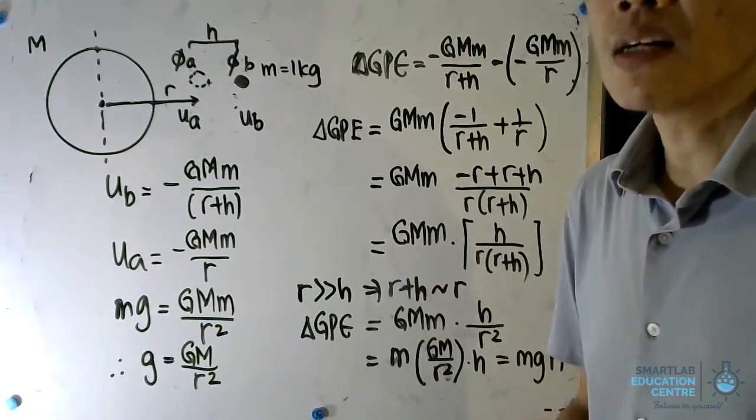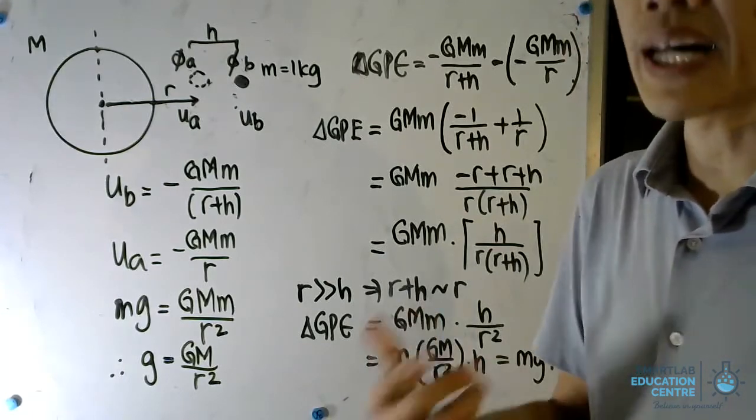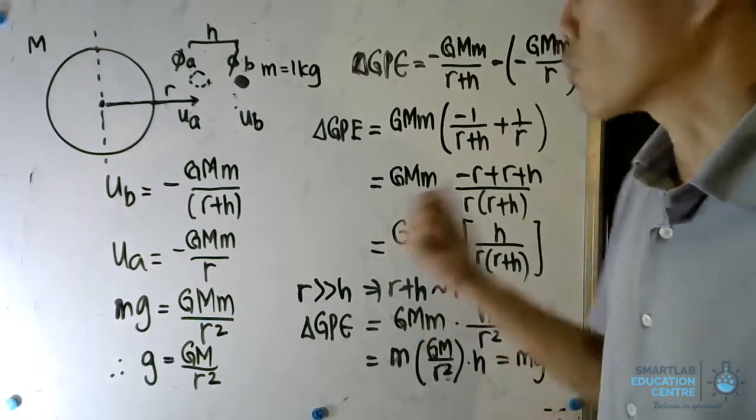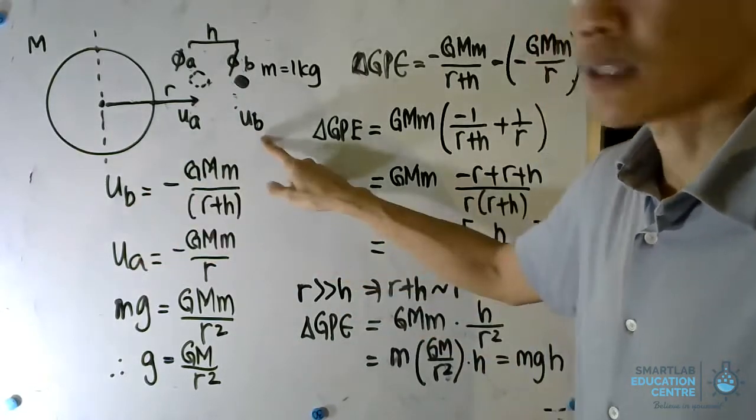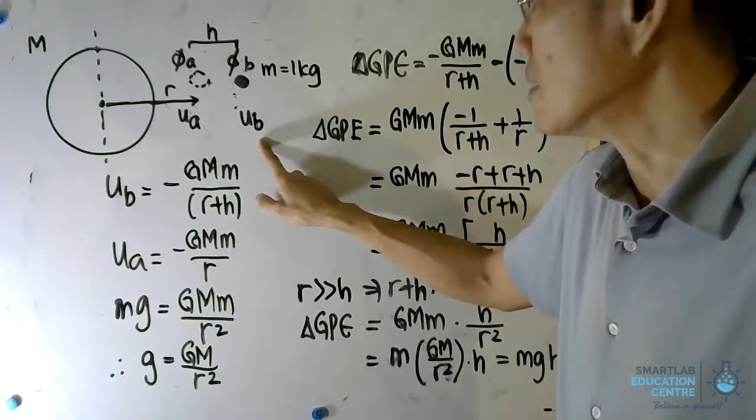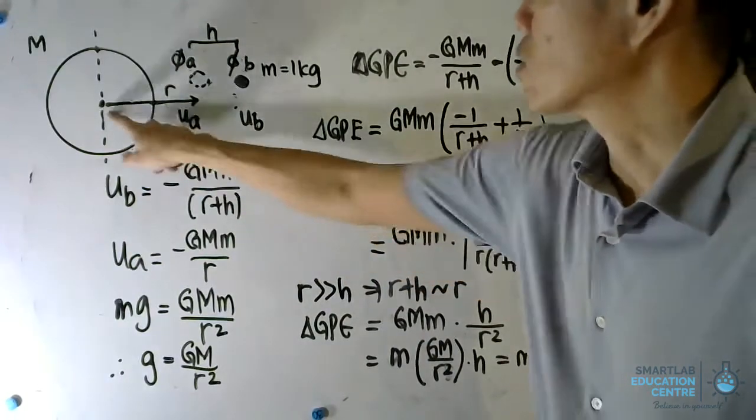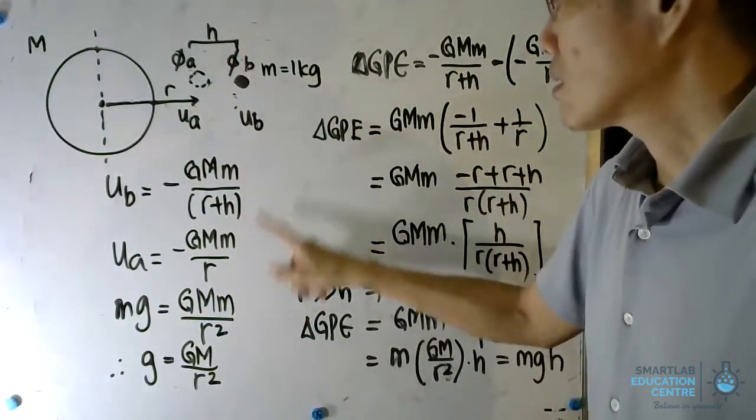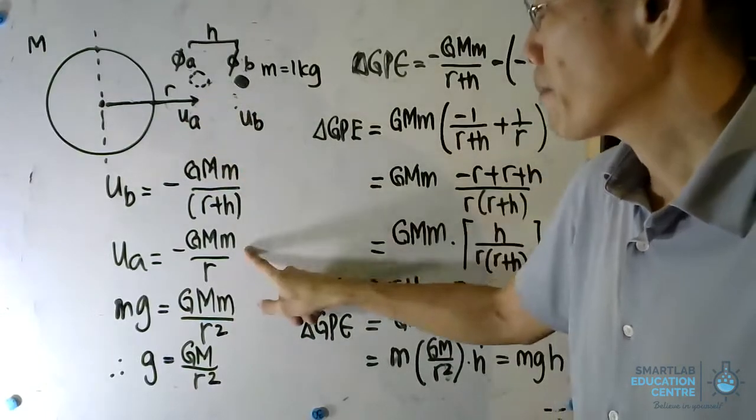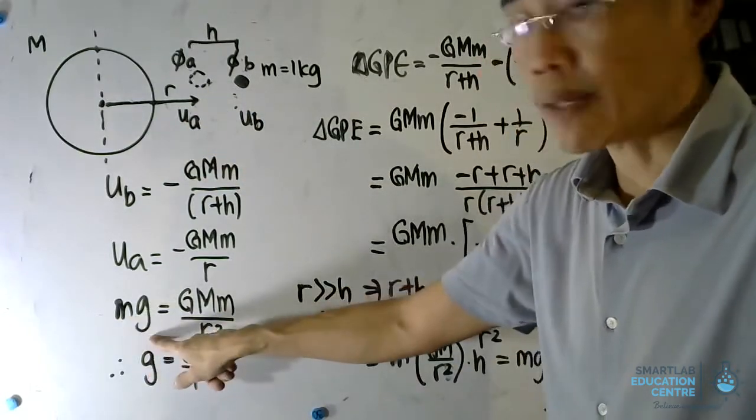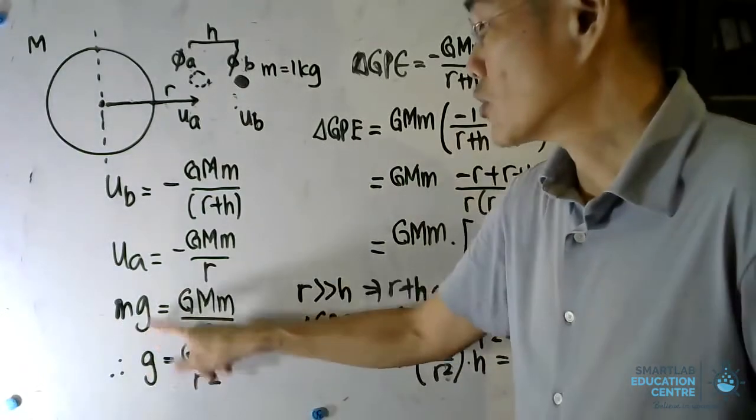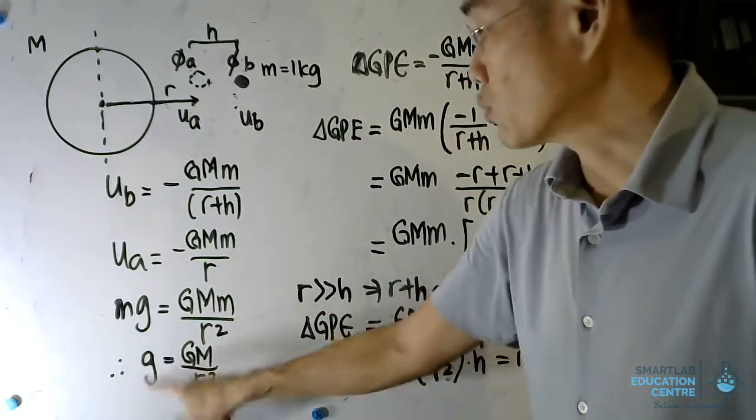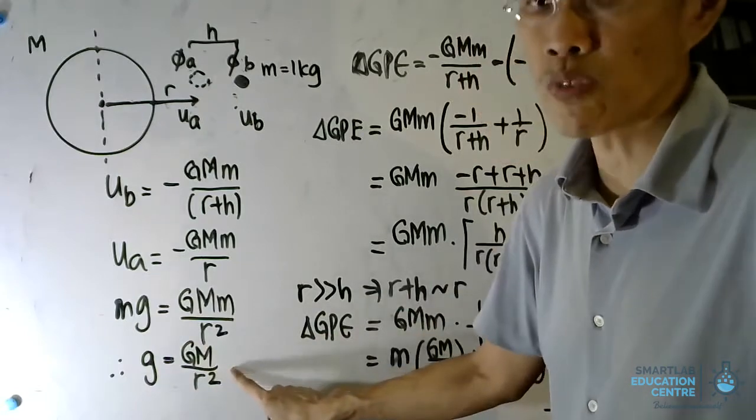Let us use the formulae for gravitational potential energy and gravitational attraction force to derive this. We start off by looking at UB, the gravitational potential energy at point B, which is this value at R plus h, then the gravitational potential energy at point A. We know that g is the acceleration due to gravity, so we can work out that g is equal to GM over R squared.